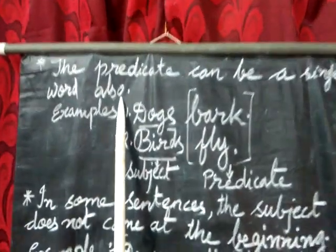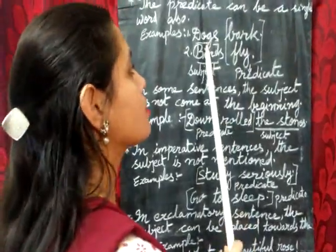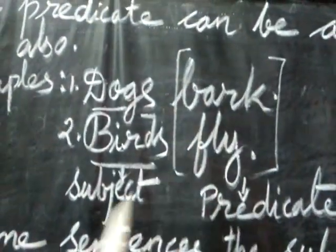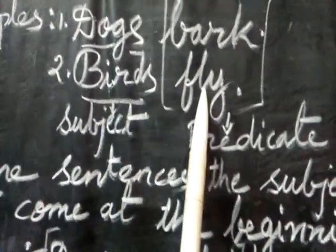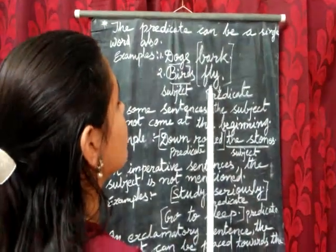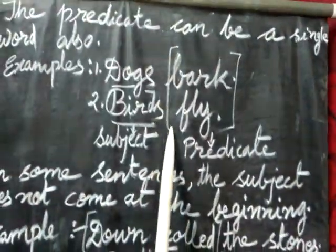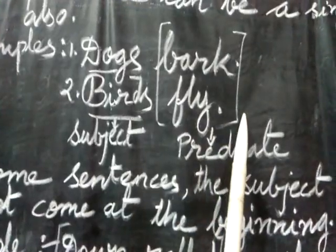The predicate can be a single word also. For example: 'Dogs bark.' Dogs is the subject and bark is the predicate. 'Birds fly.' Birds is the subject and fly is the predicate. When you find a predicate that is a single word, it will always be a verb — bark is a verb, fly is also a verb.